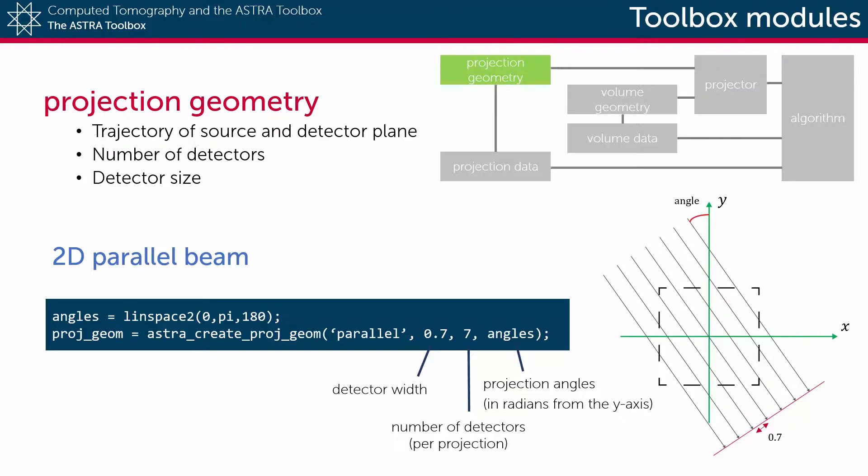Subsequent arguments define the width of a single detector and how many of them there are. The final argument specifies the angles at which the different projections are taken. This should be a list of angles in radians between the y-axis and the direction of the x-rays. In this example, we have chosen 180 equi-angularly spaced projection angles between zero and pi.